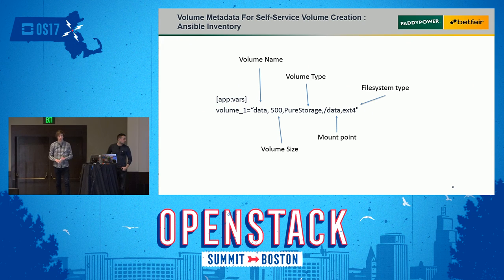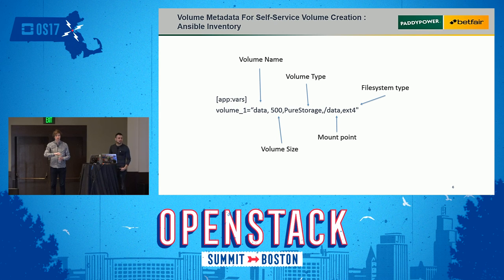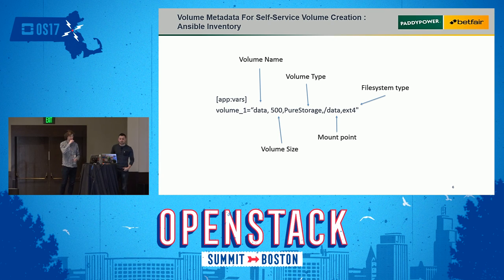We tried to keep it simple. In the static Ansible inventory file, we have, for example, volume one, with attributes for the name of the volume pre-pended with the hostname, the volume size in gigabytes, the volume type or where the volume should be created, the mount point as mounted on the VM, and the file system type we want for that volume.